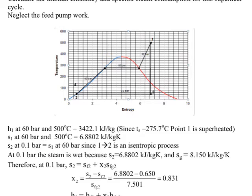So at 60 bar and 500°C, we get 3422.1 kJ/kg enthalpy. We also note that the saturation temperature is 275.7°C. So point 1 is superheated.